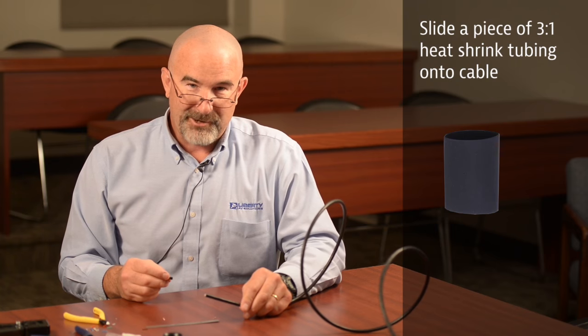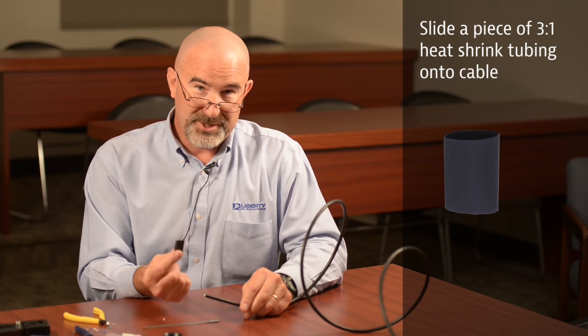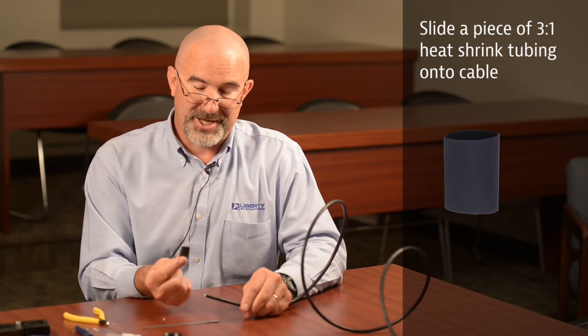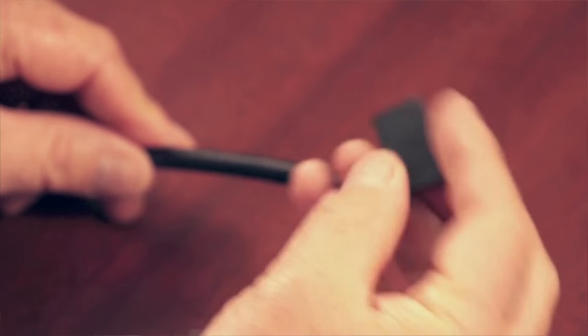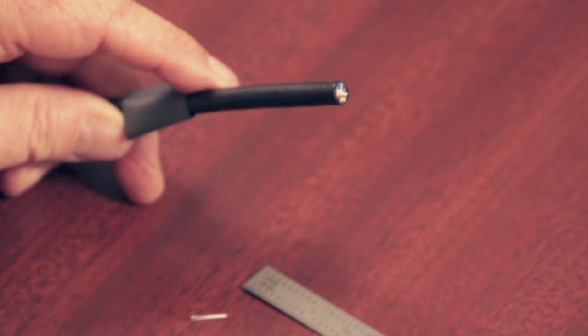Your first step before you start prepping your cable is to slide up a piece of shrink tubing over the cable. We're using 3-to-1 shrink tubing because it gives better strain relief on the cable and connector. This will be shrunk in place after we're done terminating the connector.